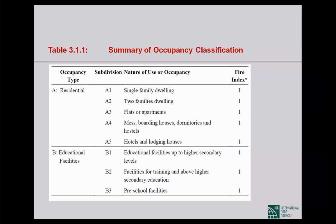In the residential category: A1 is single family dwelling, A2 is two family dwelling, A3 is flats or apartment, A4 is mess, boarding house, dormitories and hostels, and A5 is hotels and lodging houses. In educational facilities there are three subdivisions: B1 for educational facilities up to higher secondary level, B2 for training and above higher secondary education, and B3 for preschool facilities. The fire index is 1 for both these occupancy types.